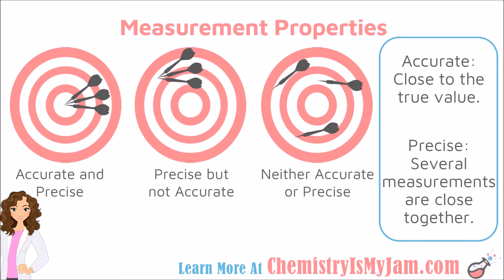In our dartboard example, the dartboard you see here on the left has three darts that have hit the bullseye. That is both accurate because it hit the true value, the desired value, and precise because all three of the darts hit the same place. Precise indicates consistency.